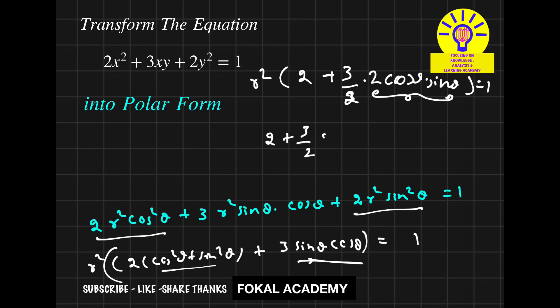Bring this r square on the right side, and this is the required polar form for the given Cartesian form. And this is the process of transformation. Thanks for watching.